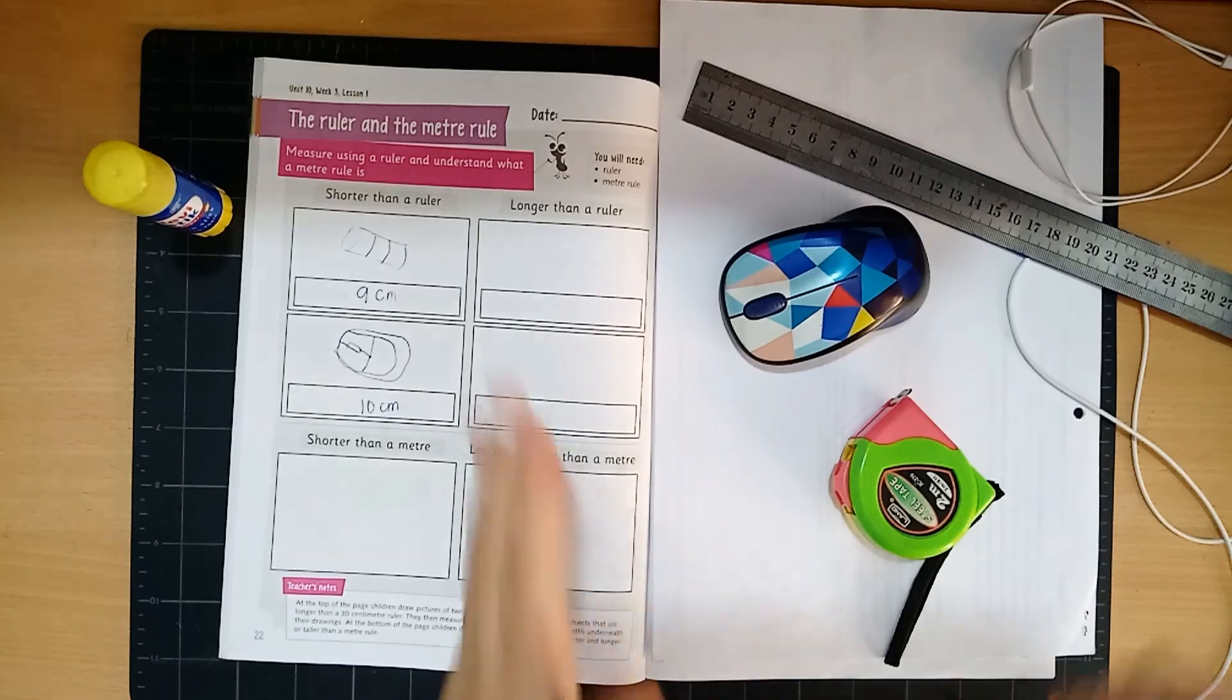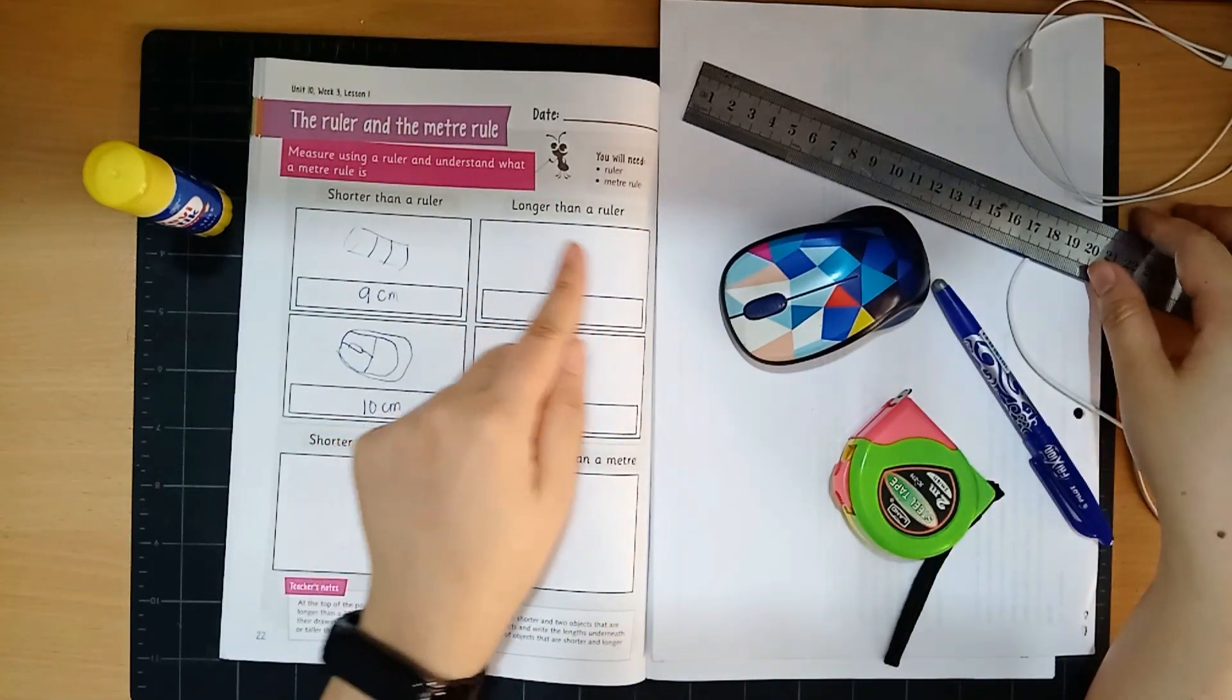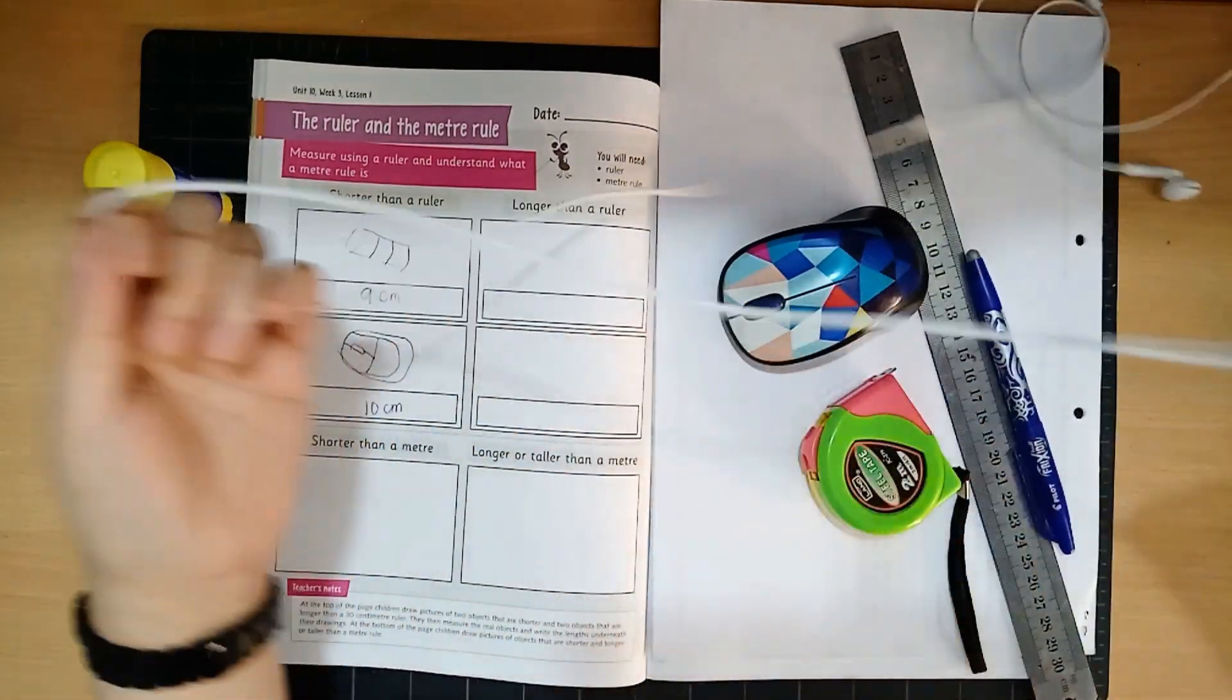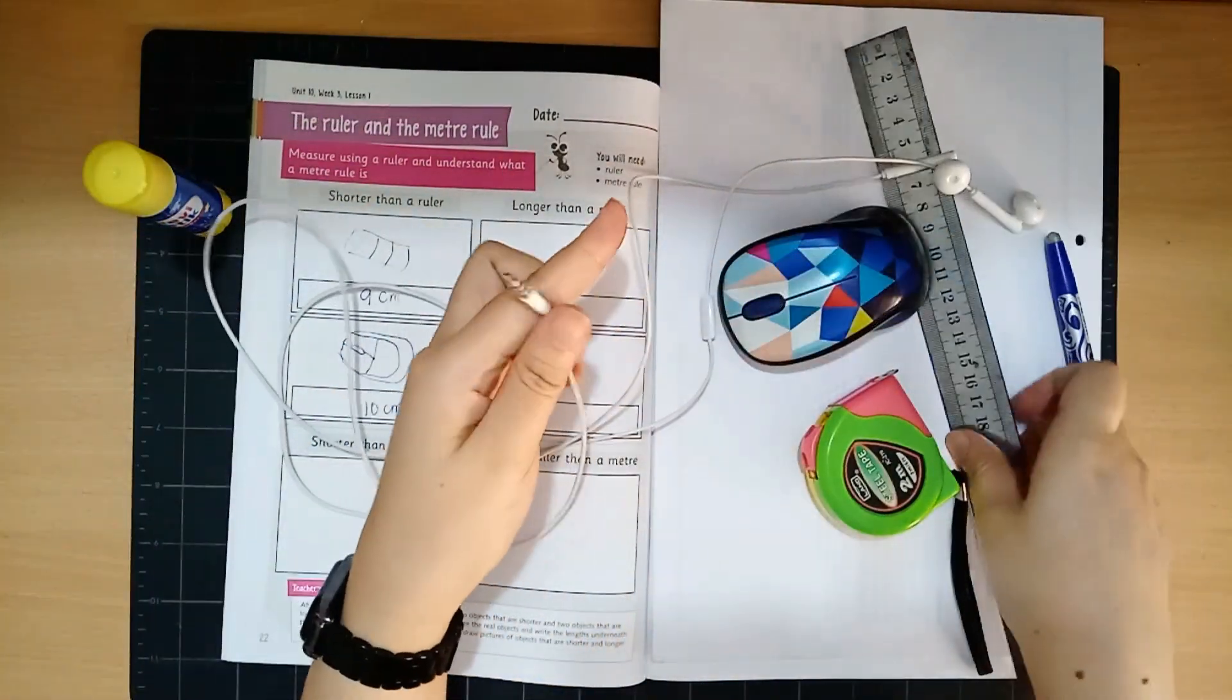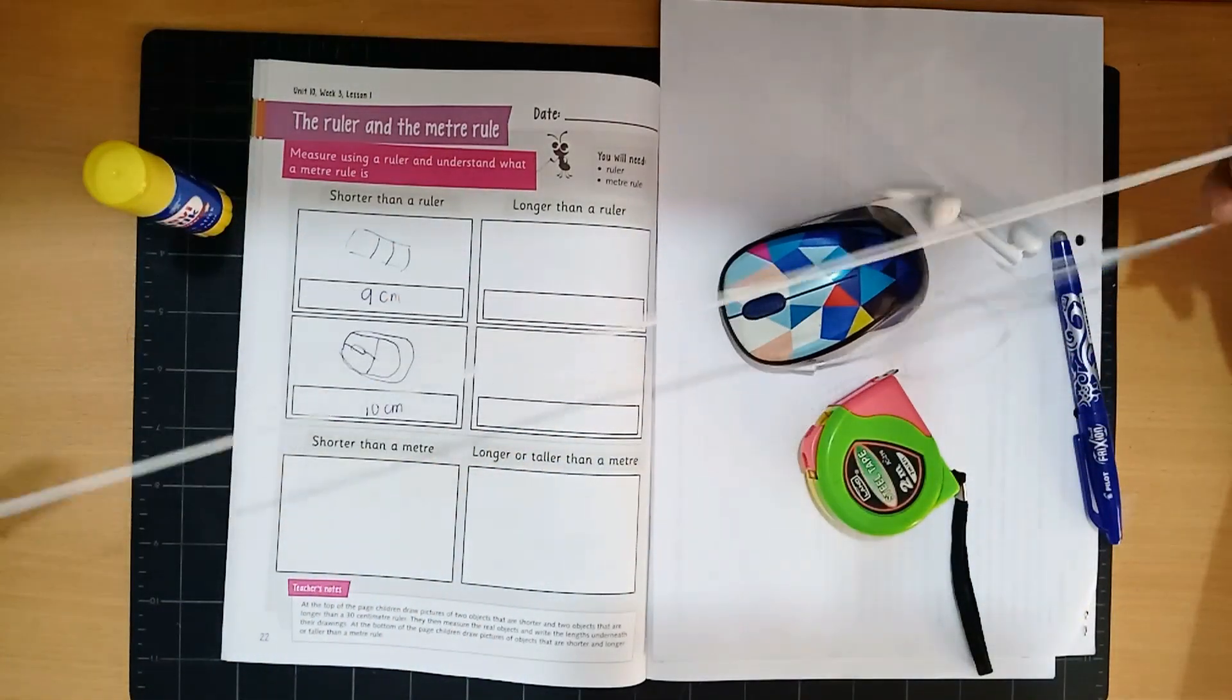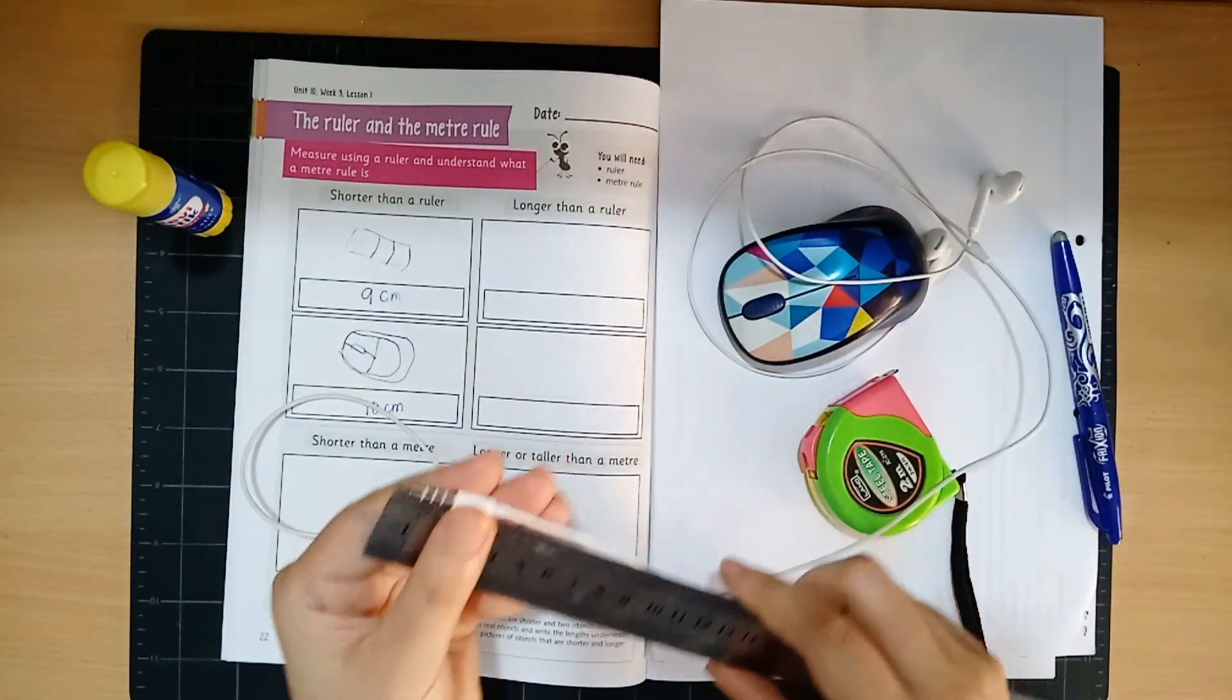Okay now for this side you're going to look for things that are longer than a ruler. I have here my earphones and look how long they are. So obviously if I start from here see it's longer way longer. So what can we do?